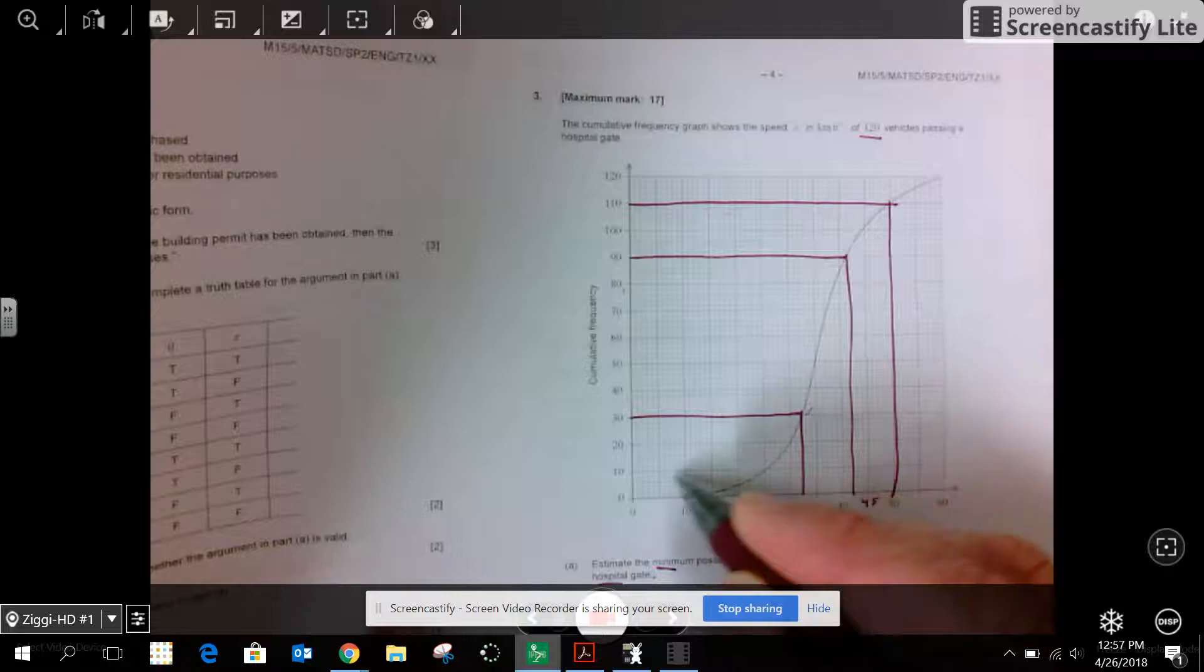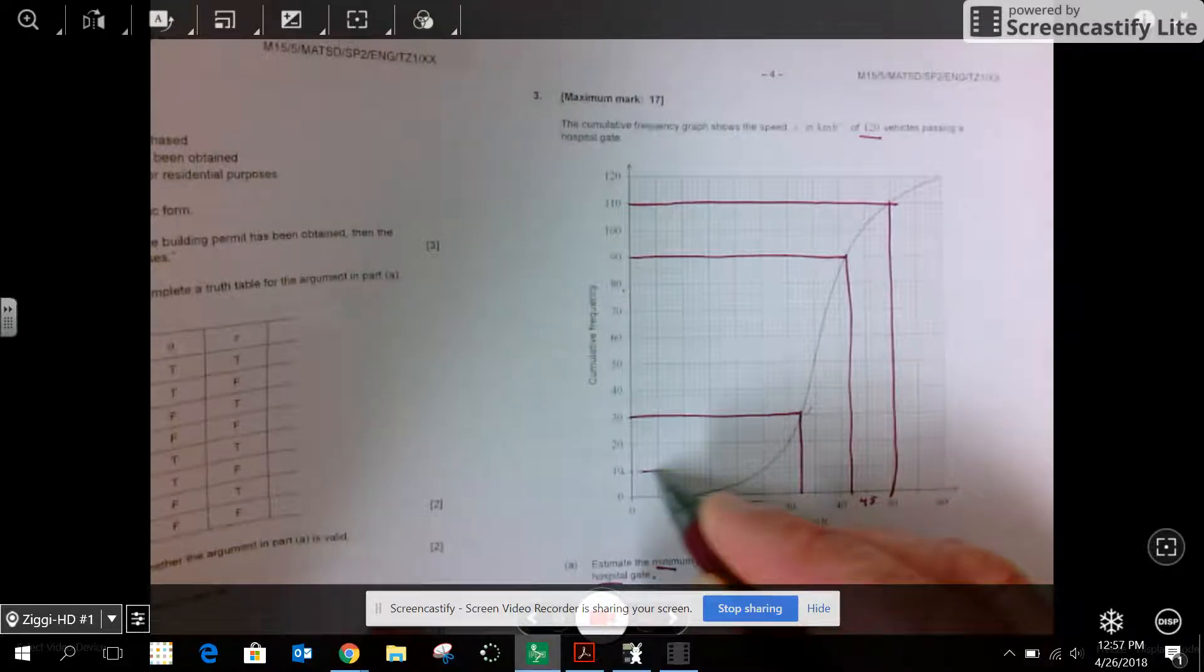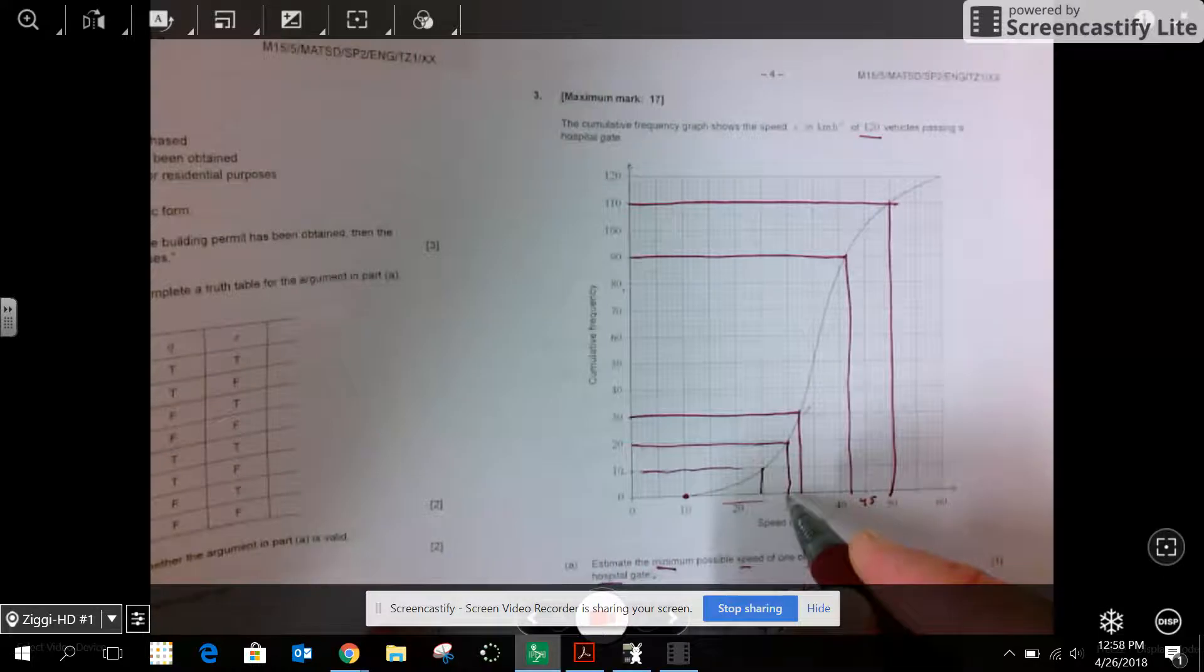10 is here. 20 is here. Yeah, I thought of drawing straight lines. It looks like about 4. Okay.